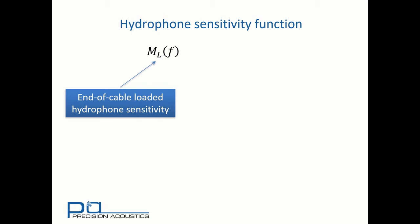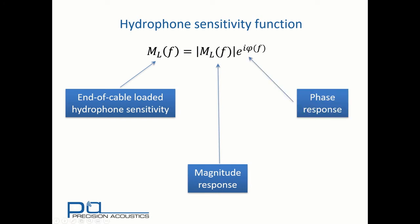There is an additional PA tutorial on oscilloscope impedance and hydrophone measurements if you're interested. This is a complex valued quantity and therefore comprises two components: a magnitude response and a phase response.